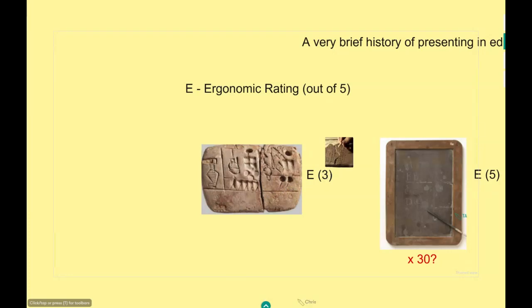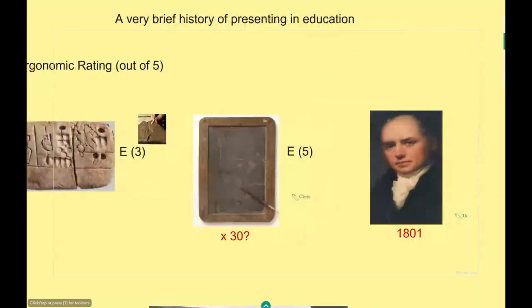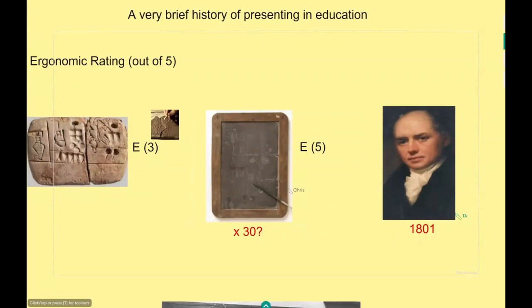Then we go on to these little slate tablets, invented around the 14th century and used mainly in school systems in the 19th century when they became well established. Before the big blackboards appeared, every student would have one of these and the teacher would use one as well — maybe 30 in a classroom. The teacher would teach on them and come around to help each individual student. I give this an ergonomic writing score of five out of five — you can write in your normal writing, no qualms there.